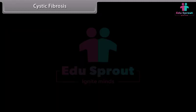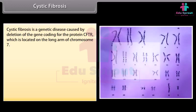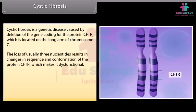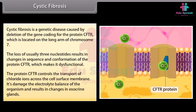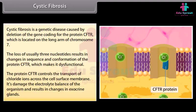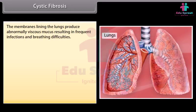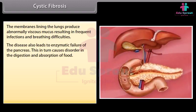Cystic fibrosis is a genetic disease caused by deletion of the gene coding for the protein CFTR, located on the long arm of chromosome 7. The loss of usually three nucleotides results in changes in the sequence and conformation of the protein CFTR, making it dysfunctional. CFTR controls the transport of chloride ions across the cell surface membrane. This damages the electrolyte balance and results in changes in exocrine glands. The membranes lining the lungs produce abnormally viscous mucus, resulting in frequent infections and breathing difficulties.